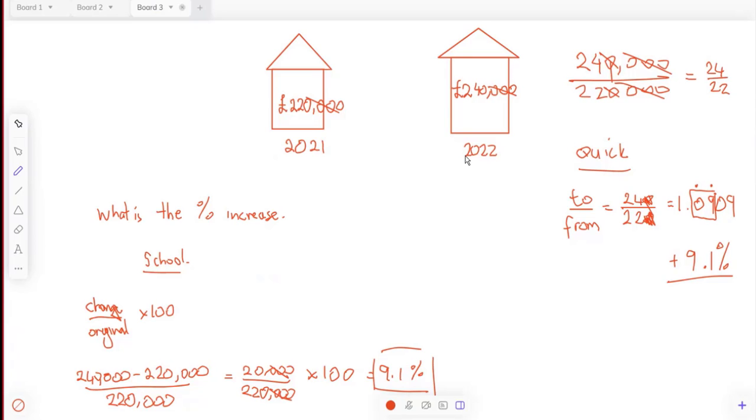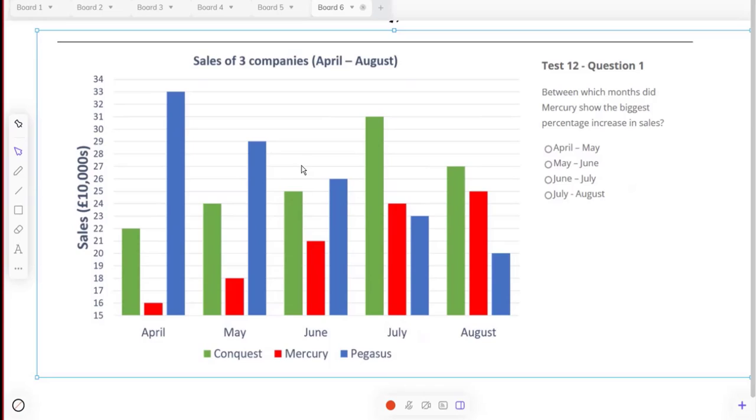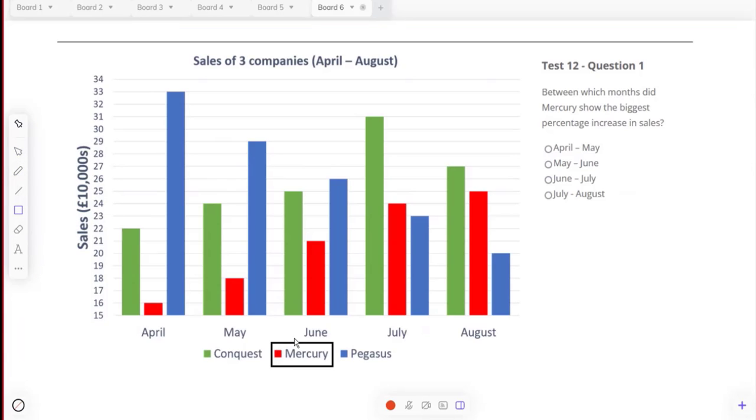On this SHL paper, between which months did Mercury show the biggest percentage increase? Straight away, Mercury is colored red. We're looking from April to May, so that would be 18 divided by 16, and you get an answer of 1.125. So what would the percentage increase be for that? I did the boxing. So what have you got in there? 12, right. Yeah, so it's 12.5. That's a 12.5% increase.